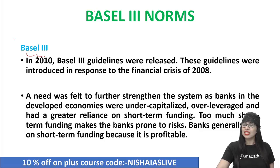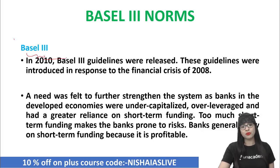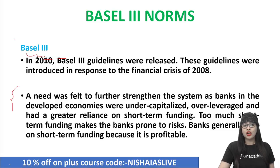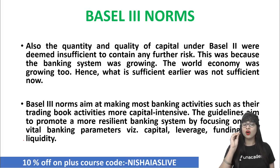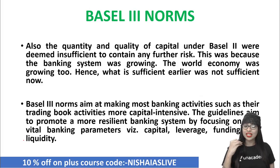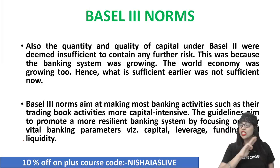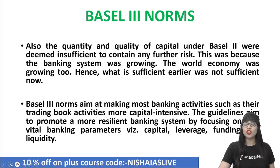During this crisis, too much short-term funding was there, and banks generally rely on short-term funding because it is profitable — but that was making the banks prone to a lot of risk. In the context of Basel 3 norms, the aim is very simple: make sure that all the book activities of the bank are capital intensive. They want to create a resilient banking system by focusing on four parameters — capital, leverage, funding, and liquidity. These four parameters should be satisfied for every bank to function properly. That is what the Basel 3 norms guidelines is all about.